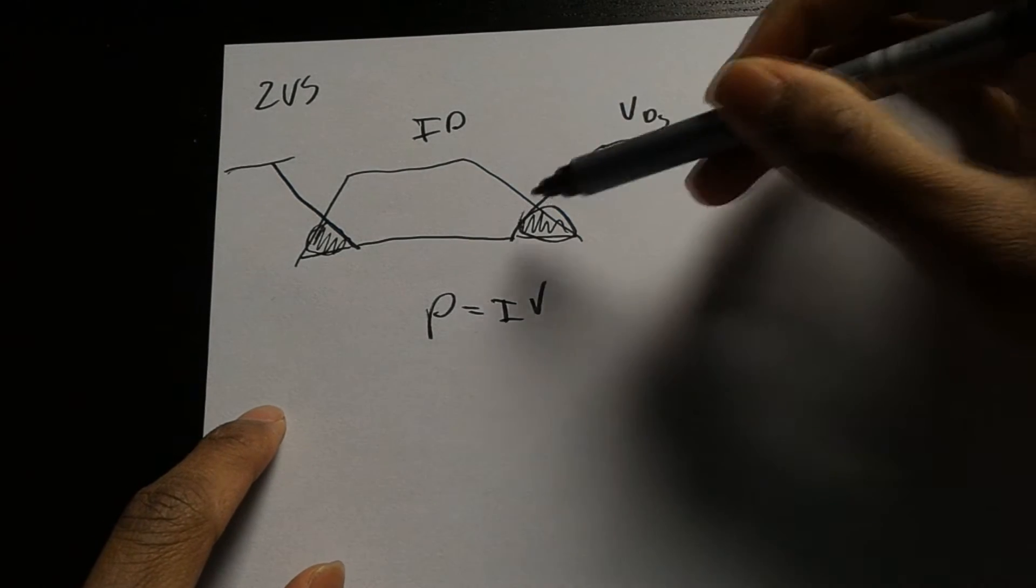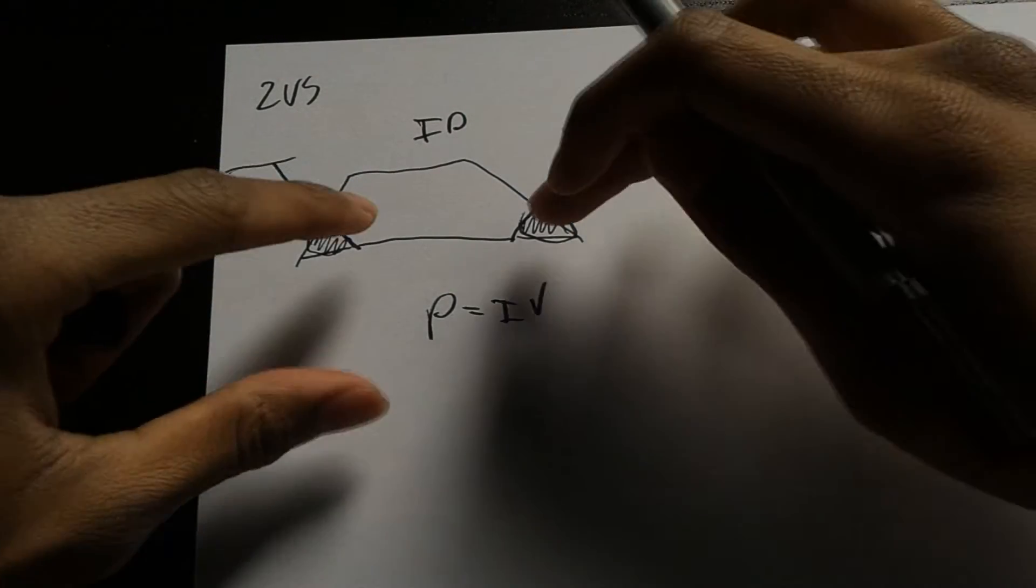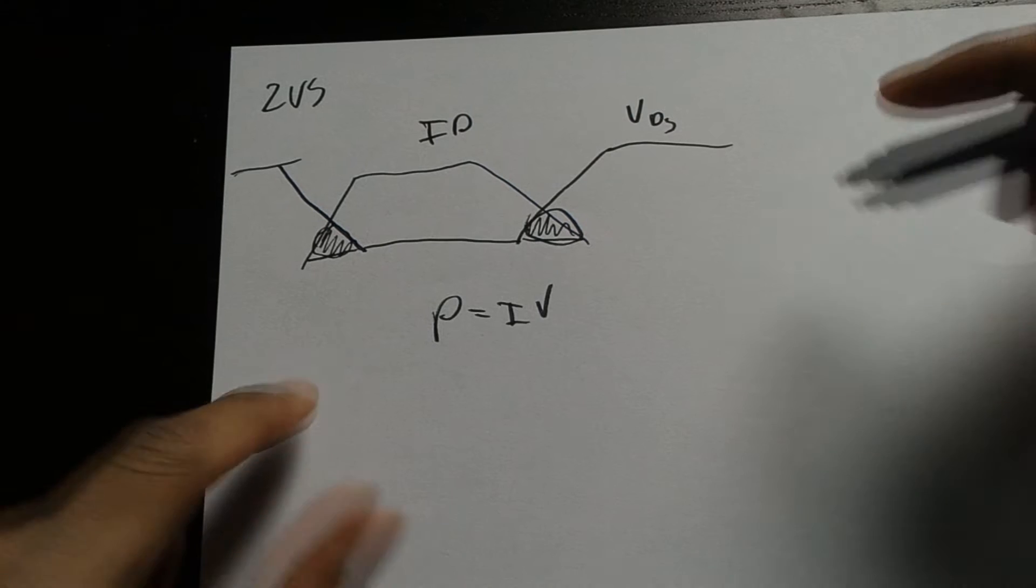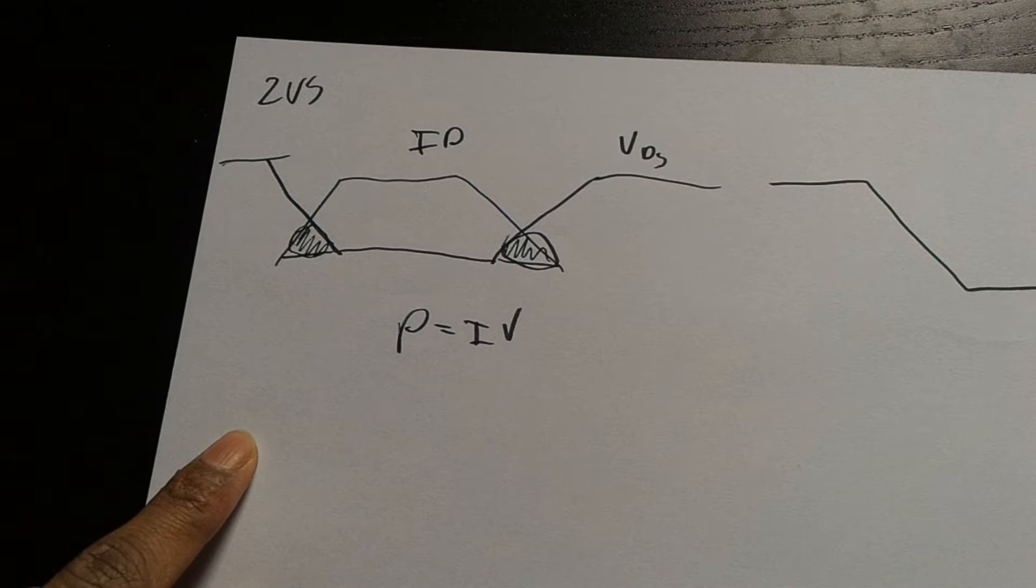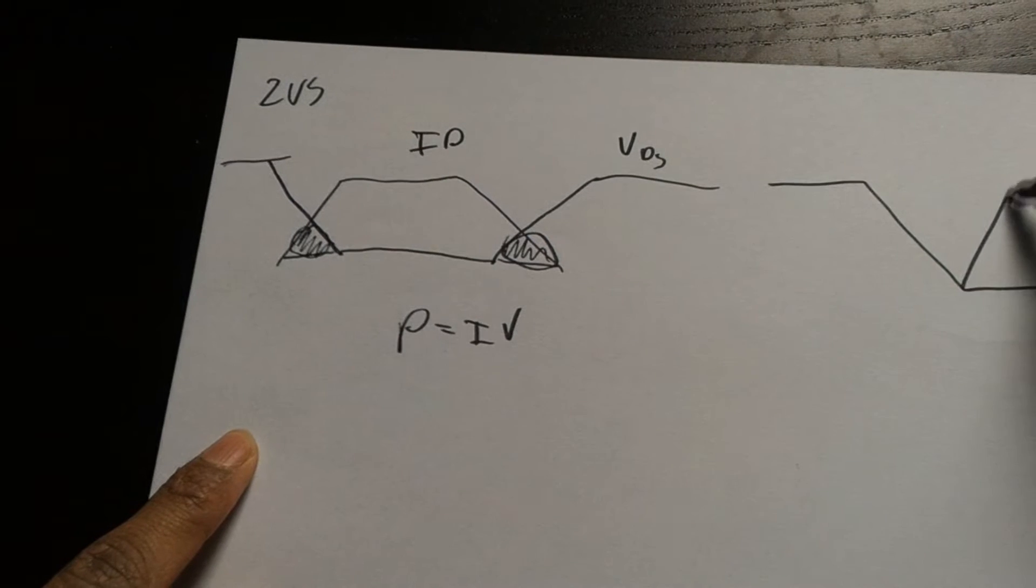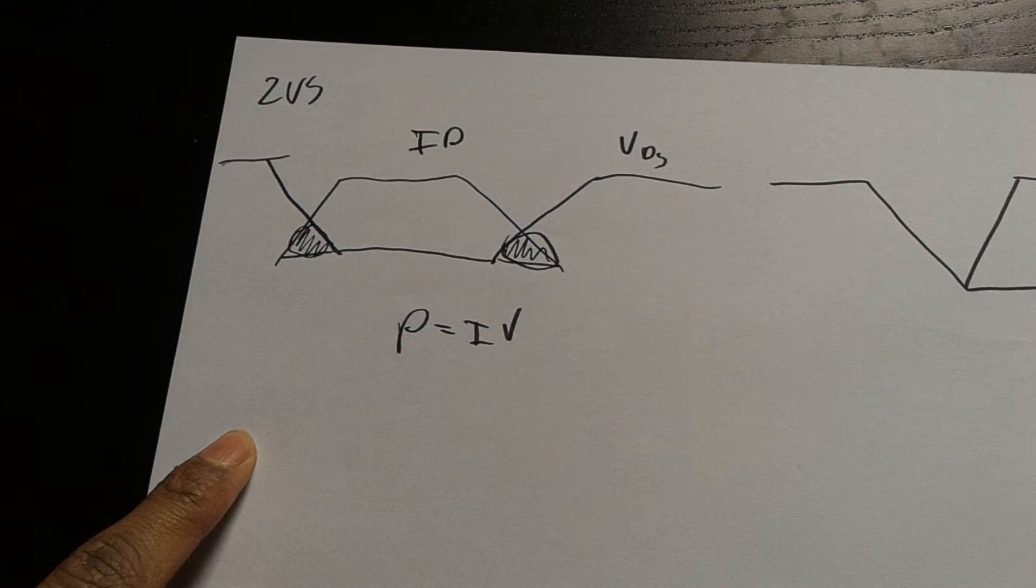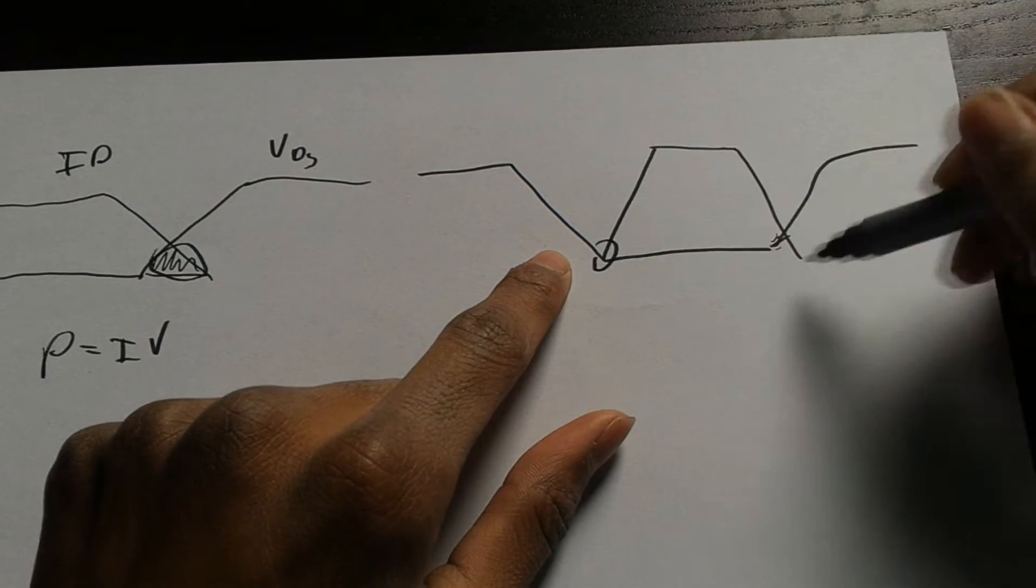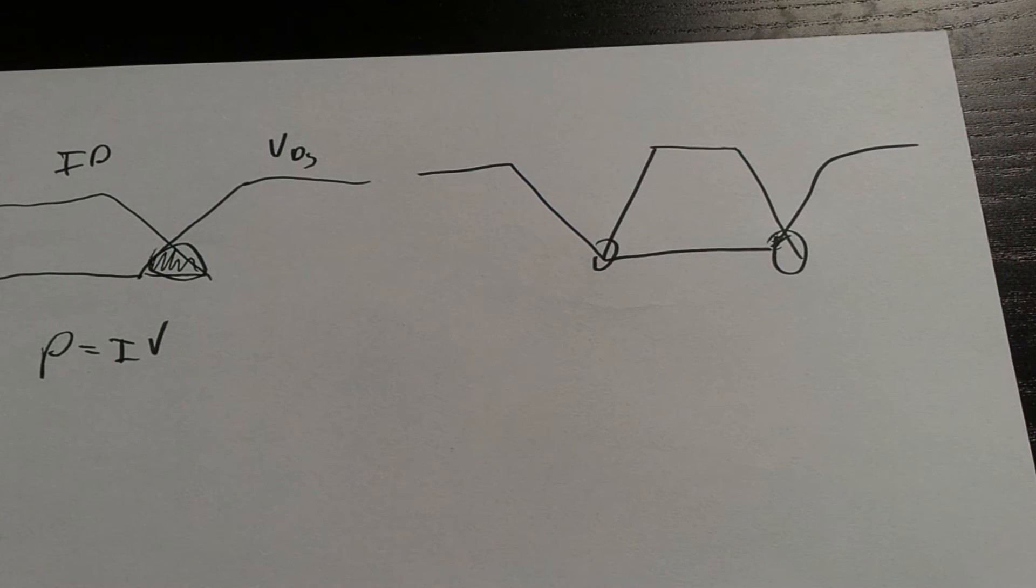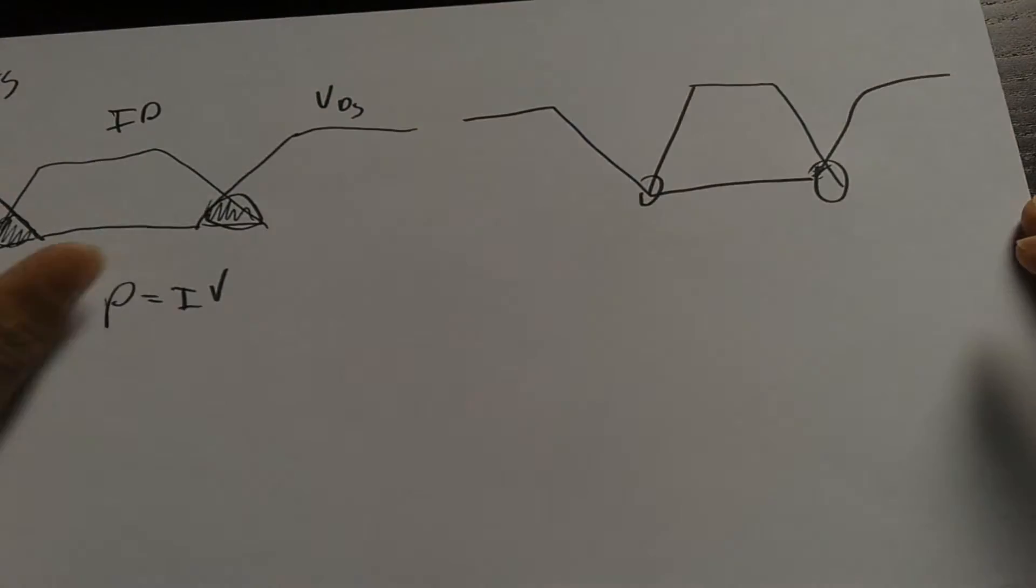We must tackle these problems by just simply making the gap bigger, and create something like this, where we don't have any switching losses. That is going to be the challenge for zero voltage switching.